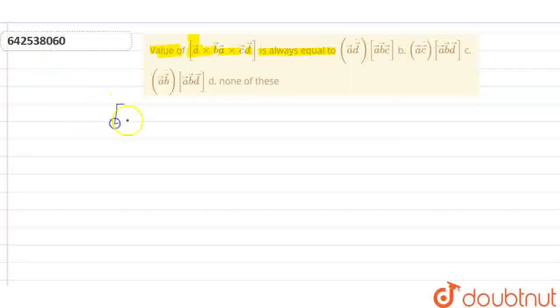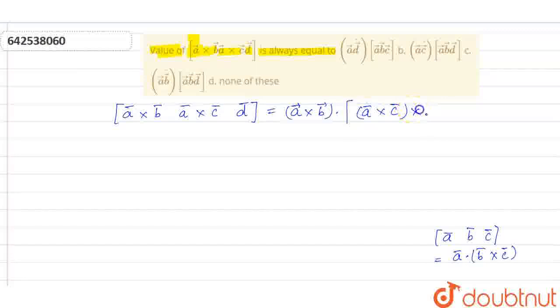Now, let's start the question. Box of A cross B, A cross C, D vector. By scalar triple product, box of ABC is equal to A dot B cross C. By this logic, we will get A cross B vector dot product with A cross C cross D vector. This can be written as, since A cross B equals minus B cross A.